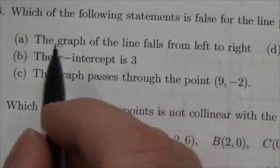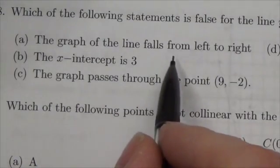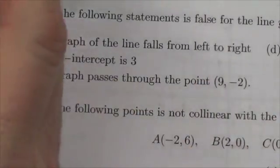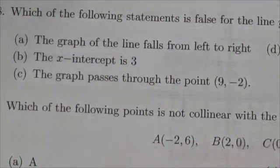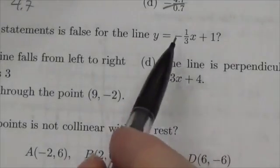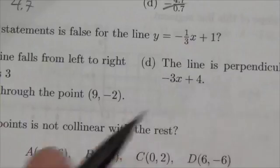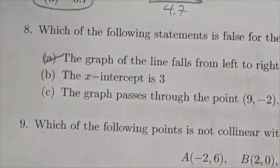Okay, so the graph of the line falls from left to right, falls from left to right. So as you go left to right, it goes down. Is that true? Yes, it has a negative slope. That's exactly what that means. So that is true.